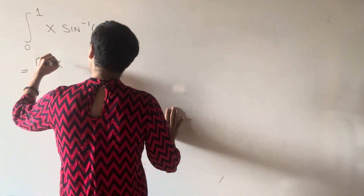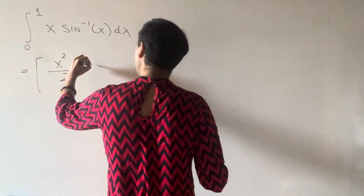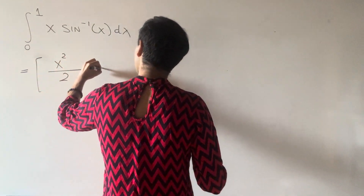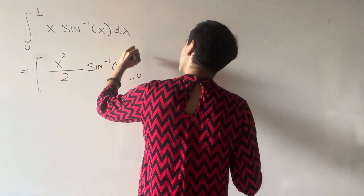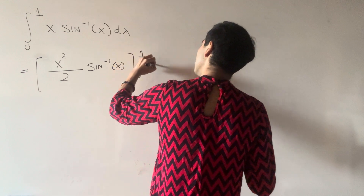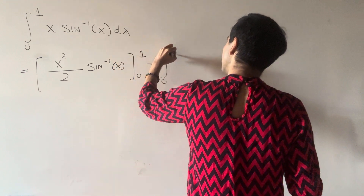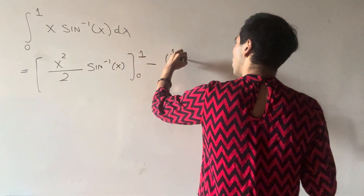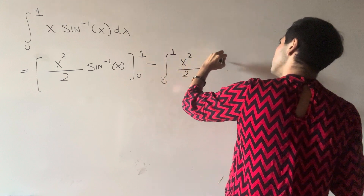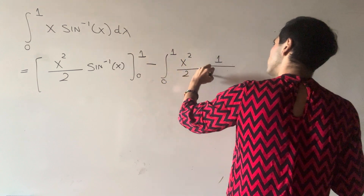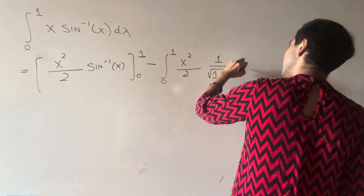An antiderivative here is x squared over two times arcsin(x), evaluated from zero to one, minus the integral from zero to one of x squared over two times one over the square root of one minus x squared.